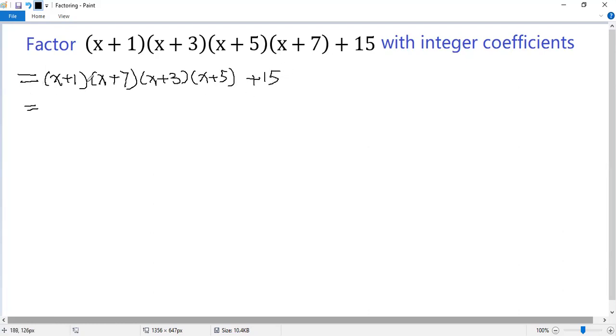Now we expand the product of the first two factors. So we get x squared plus 8x plus 7. We expand the product of the second two factors, so we get x squared plus 8x plus 15, plus 15.